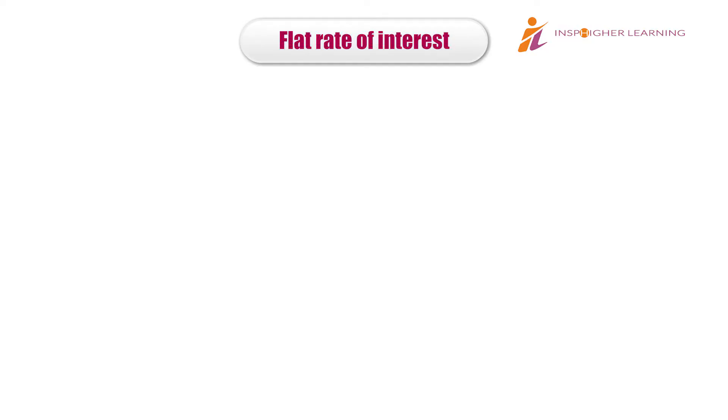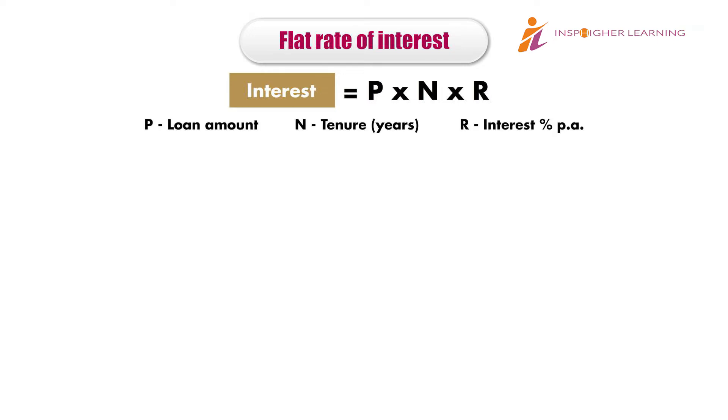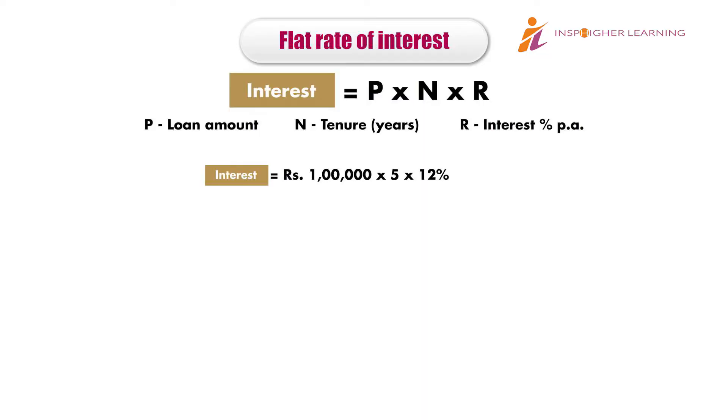When interest is quoted as a flat rate, interest and EMI are calculated differently. Interest in a flat rate method is calculated using the formula P multiplied by n multiplied by r, where P is the loan amount, n is the tenor in years, and r is the annual interest rate. In our example, if the lender quotes a 12% flat rate instead of a 12% reducing rate, we get total interest of 60,000 rupees using this formula.